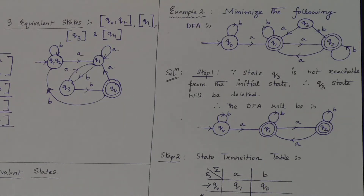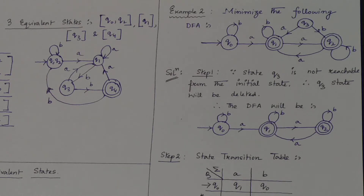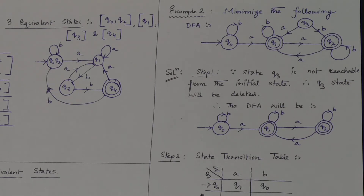Welcome to the video lecture series on Theory of Automata and Formal Languages. We are in unit one, learning about finite automata. In this video, we are learning about minimization of DFA — this is an extended part of that topic. In the previous lecture, we covered the algorithm: the partition method and state equivalence method, and we checked one example.